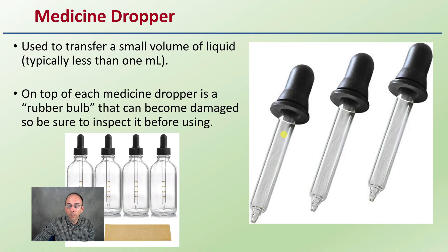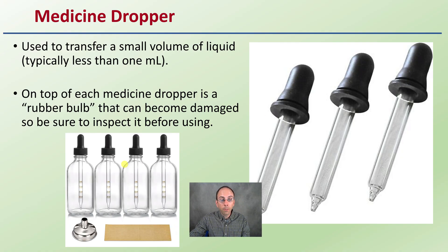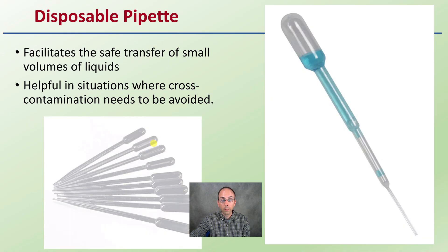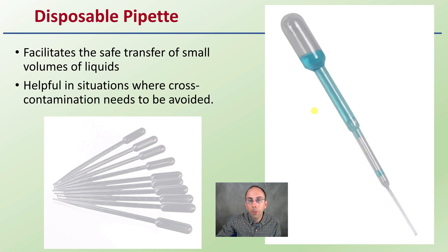A medicine dropper — the scientific name for what we might call an eyedropper — is used to transfer small volumes of liquid, typically less than a milliliter. Keep in mind the rubber stopper can become aged or damaged, so inspect it before use. A disposable pipette is a small plastic tool for transferring small amounts of liquid, very similar to the medicine dropper but a little more precise and disposable — it may need to be discarded after use.